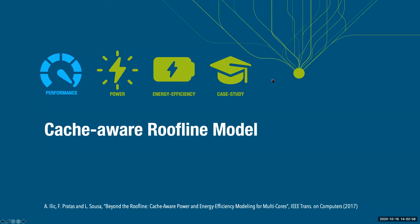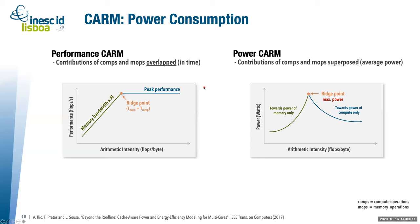Since we learned about the performance cache-aware roofline model, we tried to extend it to model power consumption and energy efficiency upper bounds of architectures. To recap: there was a bandwidth slope when limited by memory, and a flat region when limited by peak compute performance. The intersection between the memory and compute parts is called the ridge point.